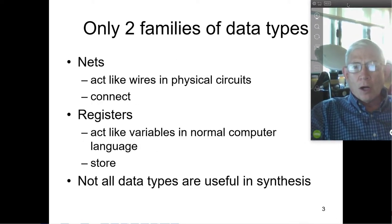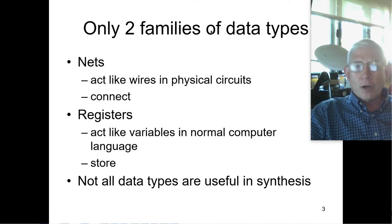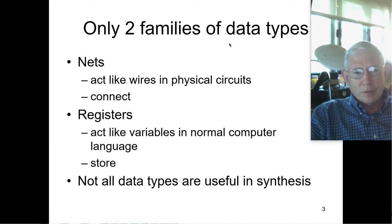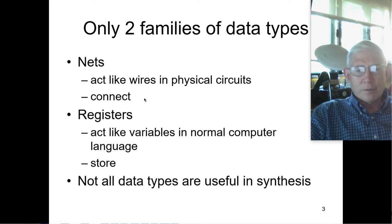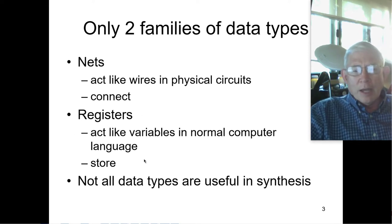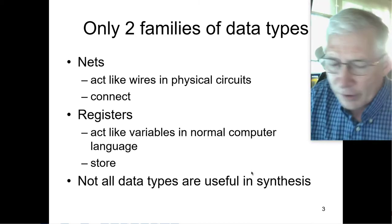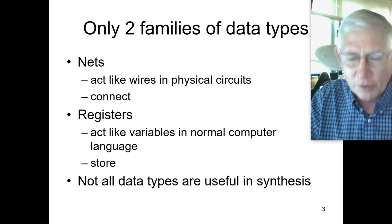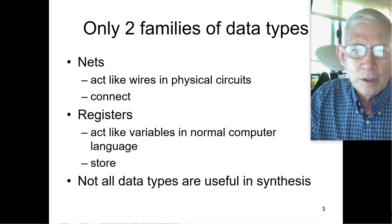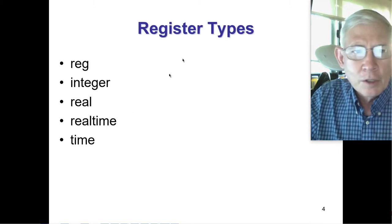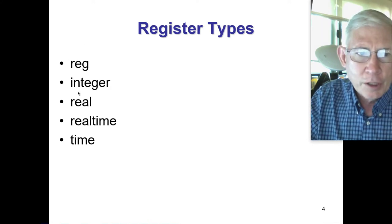In Verilog, there are only two families of data types. Nets, which basically act like physical wires and connect stuff, and registers, which act like variables in a normal computer language and actually store things. Not all data types are useful in synthesis. The register types are: register, integer, real, realtime, and time.